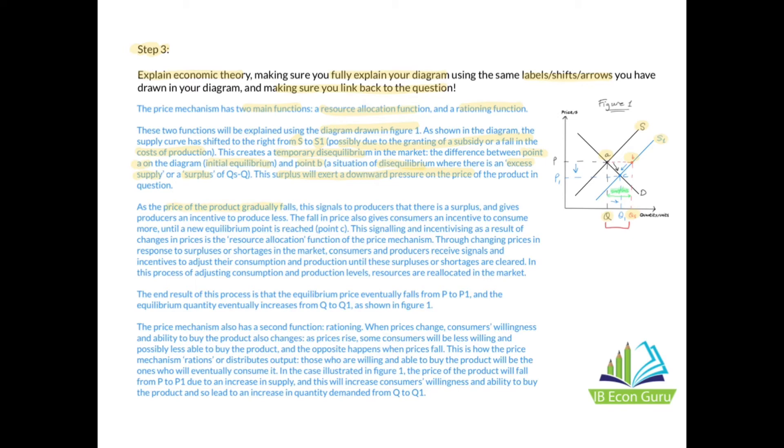As the price of the product gradually falls, this signals to producers that there's a surplus and gives producers an incentive to produce less. The fall in price also gives consumers an incentive to consume more until a new equilibrium point is reached, which is point C in my diagram. This signaling and incentivizing as a result of changes in prices is the resource allocation function of the price mechanism. Through changing prices in response to surpluses or shortages in the market, consumers and producers receive signals and incentives to adjust their consumption and production until these surpluses or shortages are cleared. In this process of adjusting consumption and production levels, resources are reallocated in the market. So I've explained the resource allocation function.